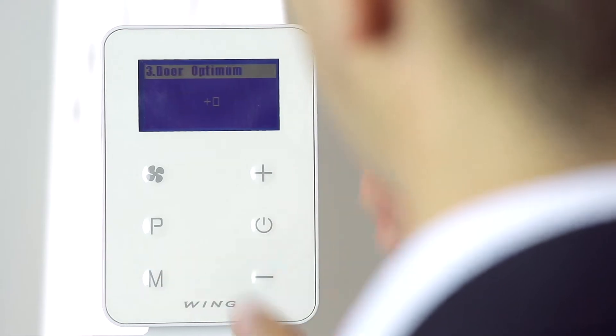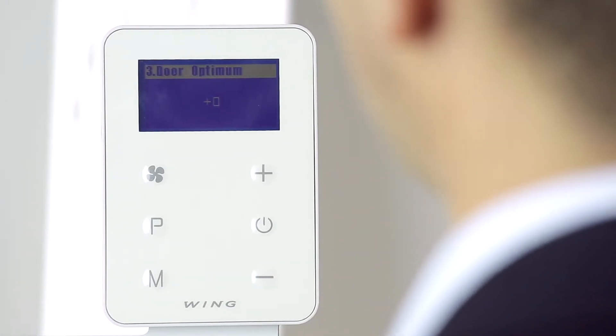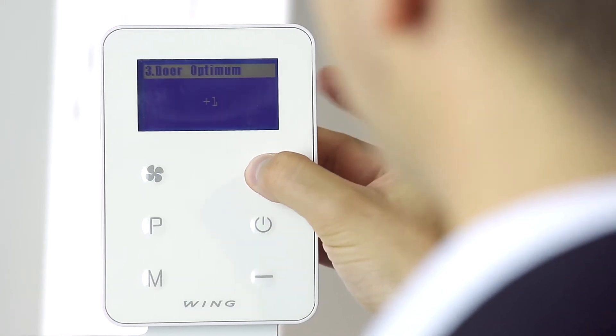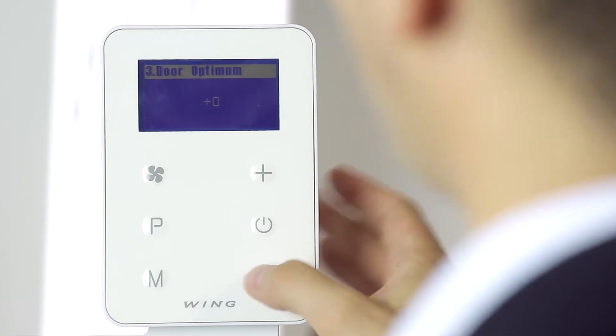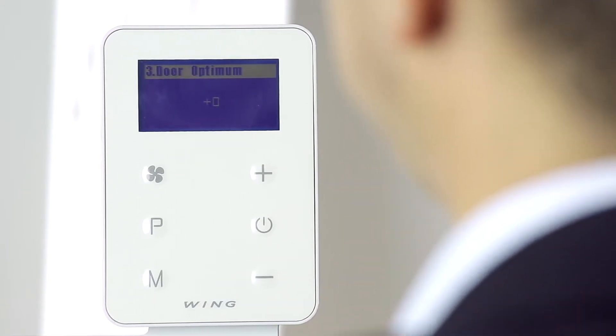By using the M button, we move to the next setting. In the door optimum setting, we have available values of plus one or plus two. The door optimum function is a characteristic function for the operation of a curtain with a door sensor.